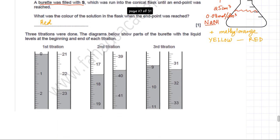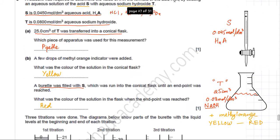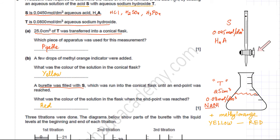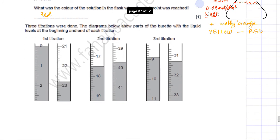Three titrations were performed, and diagrams show the burette liquid levels at the beginning and end of each titration. Three separate experiments are done so that the average gives more accurate results. We are interested in the volume of acid added in each titration, which is the difference between the initial and final burette readings.